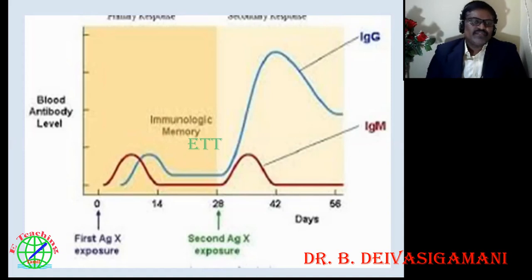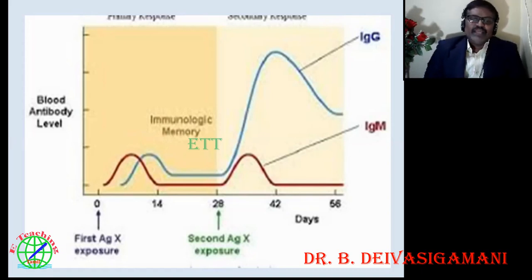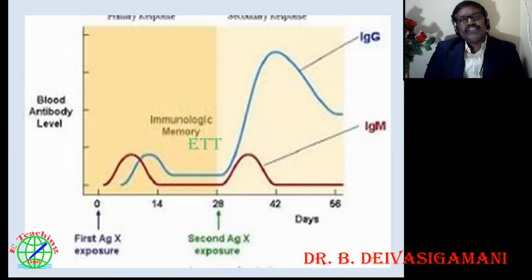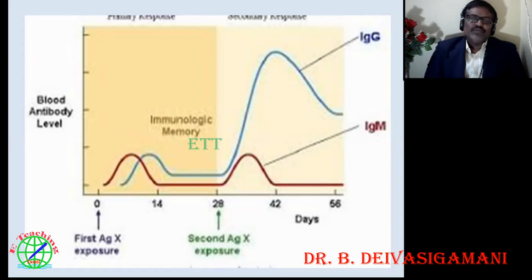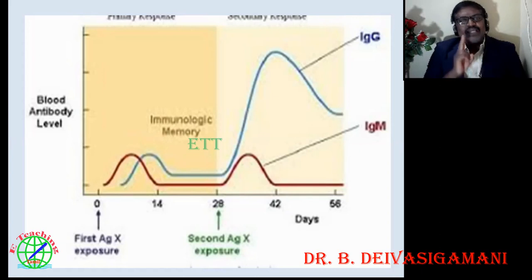Looking at the flow chart: first, upon antigen exposure, antibody levels in the blood increase in primary and secondary responses. IgM is formed in the primary response, and IgG in the secondary. IgG provides immunological memory cells. Cell mediated immune response gives rise to antibody-producing cells — plasma cells — which produce antibodies. The immune response mechanism in higher animals and fish is similar: when antigens or pathogens enter the system, two types of responses occur — humoral response and cell mediated response.